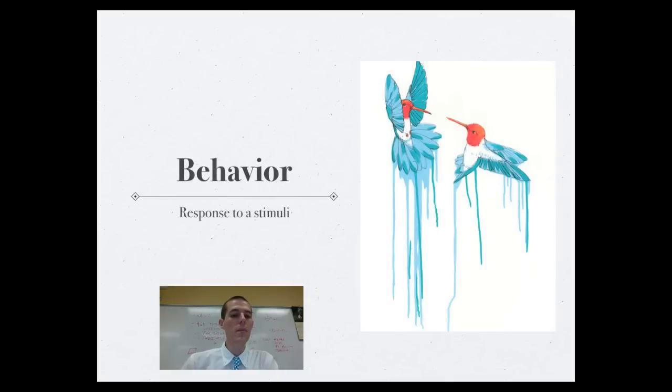First thing I want to start off with is just the basic idea of behavior. For the living world, a behavior is defined as a specific response to a stimuli. So stimuli comes in, the nervous system processes it, somehow communicates with the muscular system, which initiates some sort of response. And that's all behavior is.